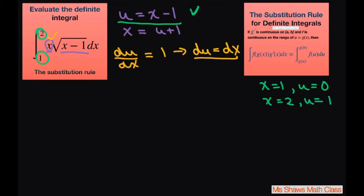So now we can rewrite our integral as 0 to 1. Our x is u plus 1. I just rewrote this one and solved for x. So this would be u plus 1, and then this is just the square root of u which I'll write as u to the 1 half.